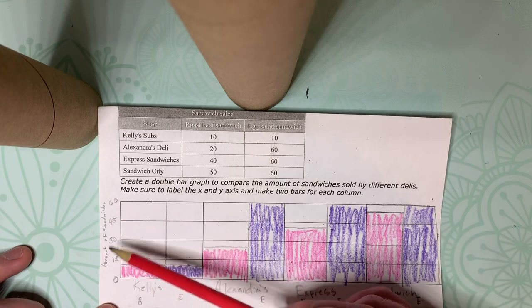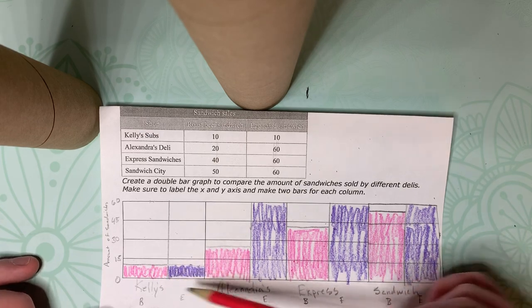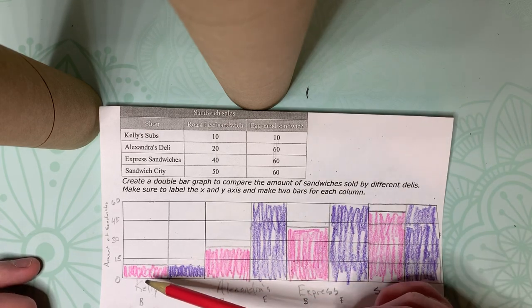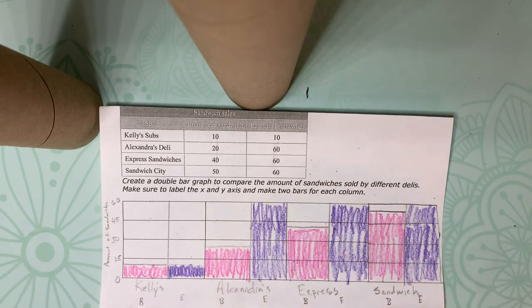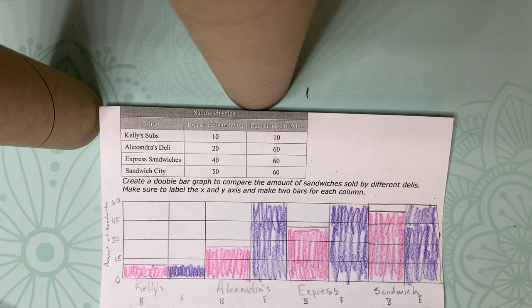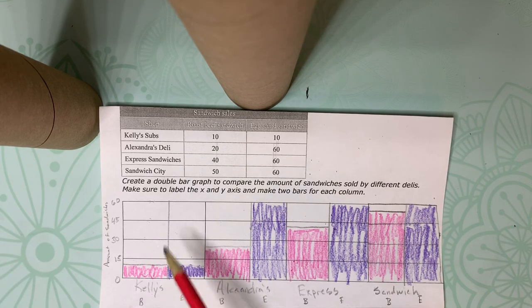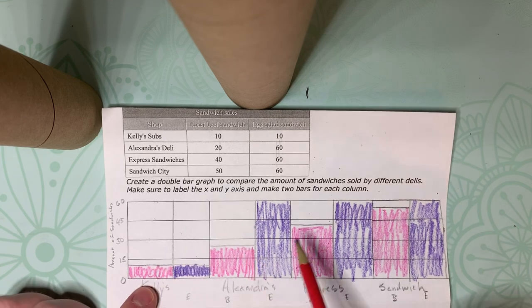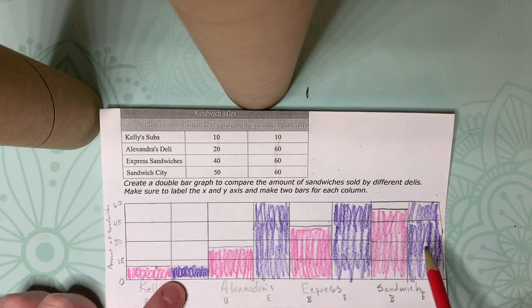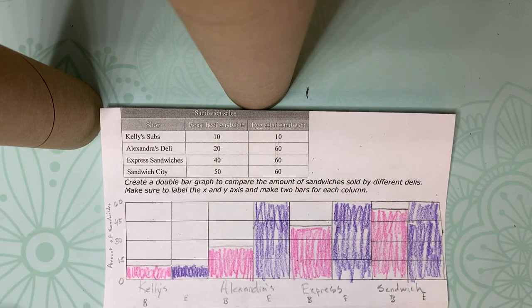Don't forget to label your y-axis, and then as you start going, it does help to color. I got confused going halfway through this, so I started coloring it, and it kind of helped keep everything in line. So the reason we would do a double bar graph would be something that we could compare separate items at separate places. So, for instance, this one does sandwiches. We can compare the beef sandwiches for each place, but we can also compare the egg sandwiches for each place. Not often are we going to use a double bar graph, but it is handy to know how to do, and pretty self-explanatory as you go.